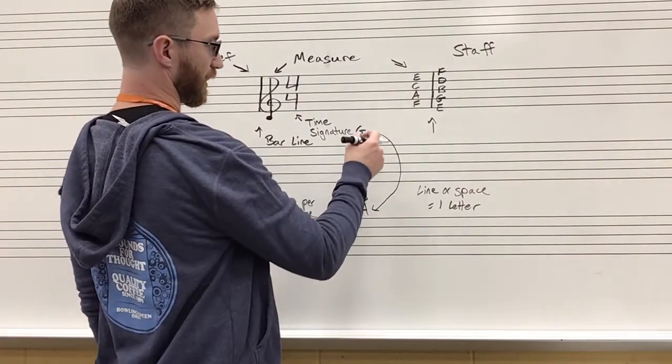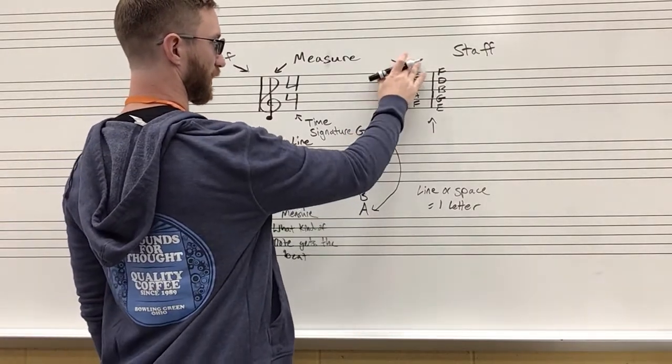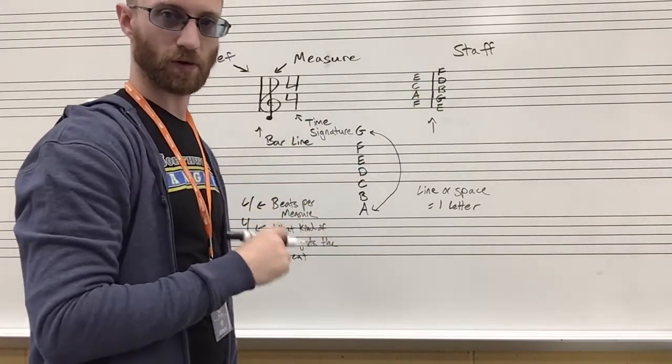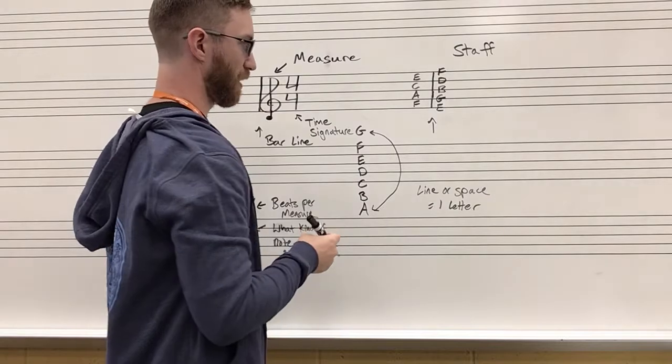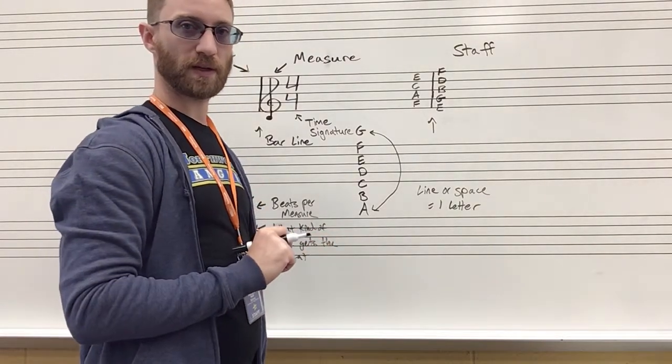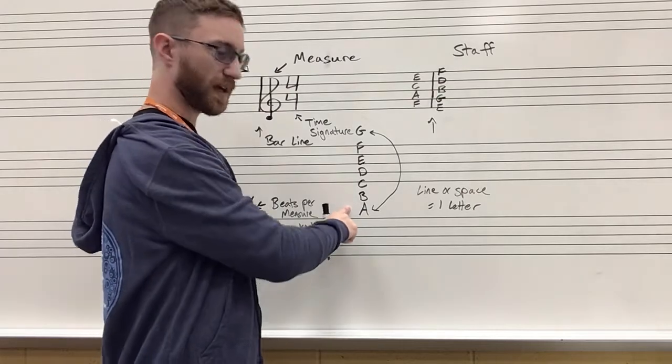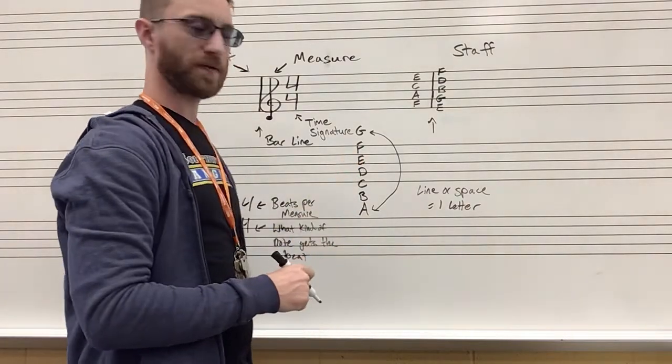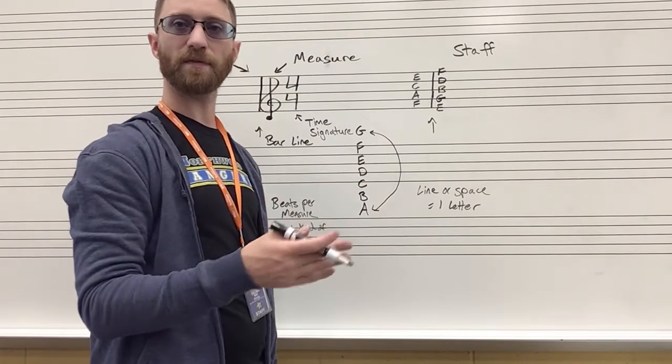Now there is one more thing that we're going to look at here, and that is called ledger lines or going off of the staff. If you remember the concept that every space and line gets one note and that the music alphabet is A through G, you will be fine with any notes that are off of the staff.